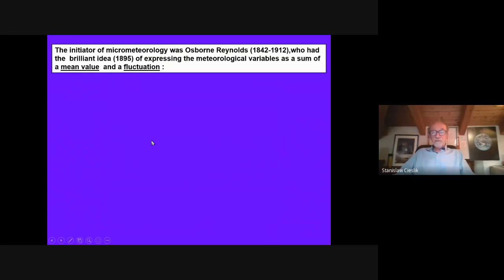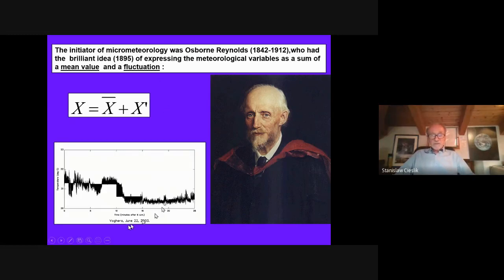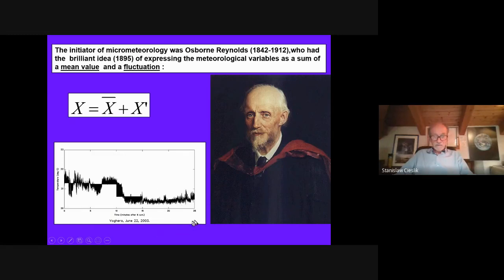The initiator of micrometeorology was Osborne Reynolds, who lived mainly in the 19th century. He had the brilliant idea of expressing meteorological variables as a sum of a mean value and a fluctuation — a very simple formula. Any variable can be decomposed into these two parts. It's a useful definition because it separates the mean trends of the variable from these very rapid fluctuations, as you can see from this graph representing a 25-minute plot of temperature measurement, showing both fluctuations and five-minute means.